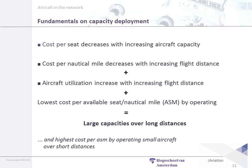This is just again an overview: cost per nautical mile decreases with the increase of flight distance. Aircraft utilization increases with the increase of flight distance because of the feeding capacity, which results in low cost per available seat mile — with the conclusion that large capacity over long distances is most favorable. But of course, as the Ryanair case shows, there are some smart methods to still be very profitable on small distances.